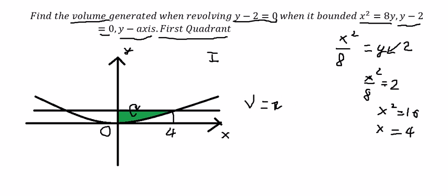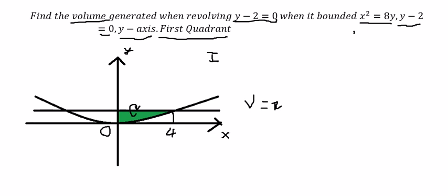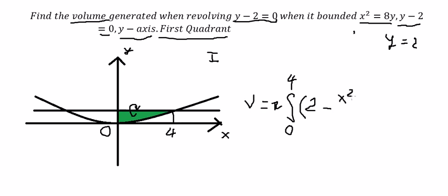Now we set up the integral from 0 to 4. Since they revolve about y equal to 2, we get the integrand as 2 minus x squared over 8, squared, dx. We need to expand this expression.